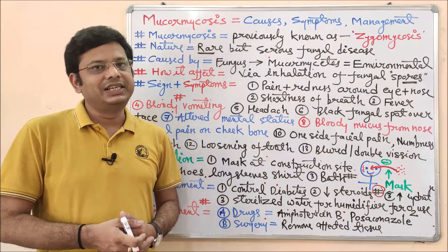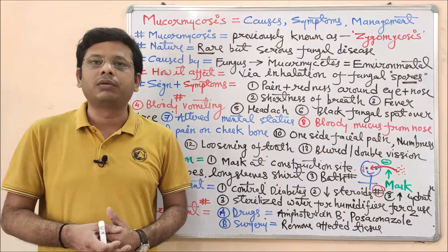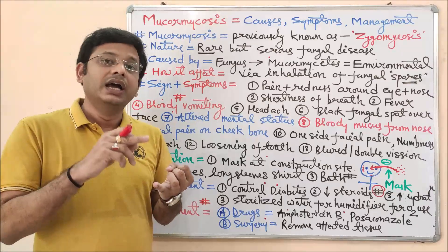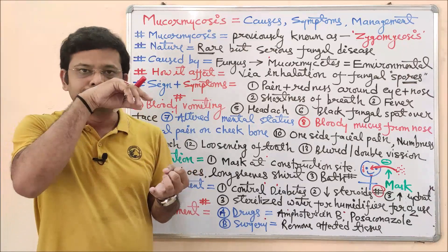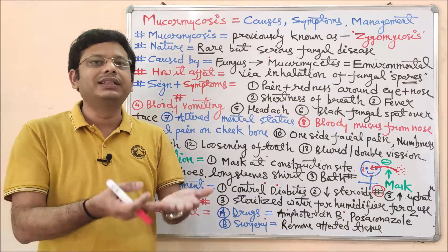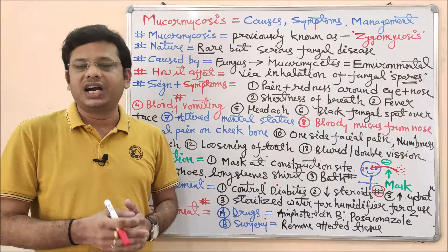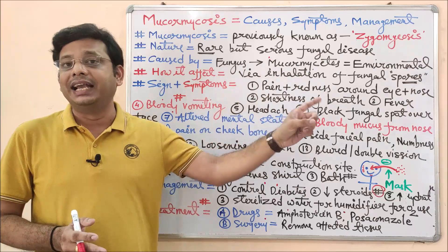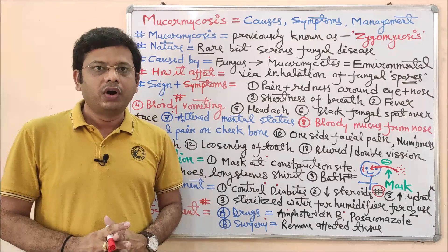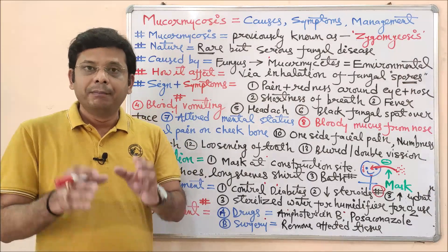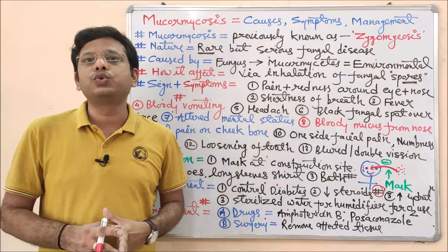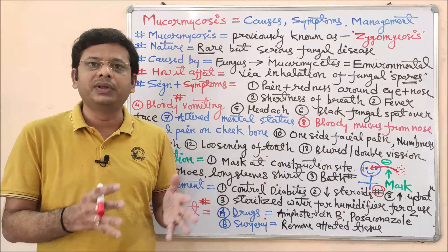Fever is another symptom — a condition where body temperature rises above the normal 37 degrees Celsius. Whenever a pathogen such as a virus, fungus, bacterium, or allergen enters the body, the body's antibodies fight against the antigen. This interaction causes a rise in body temperature. However, fever is not restricted to mucormycosis — it is also a symptom of many viral fevers and COVID-19.